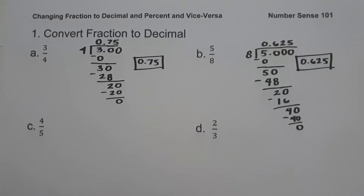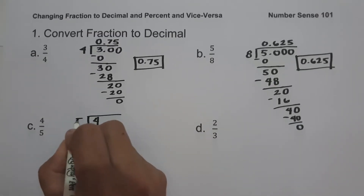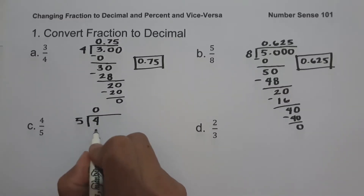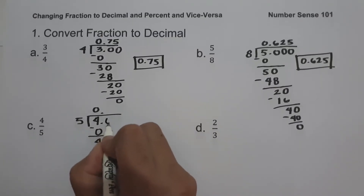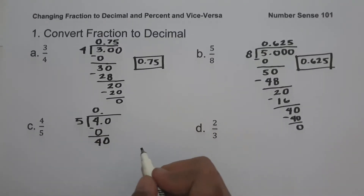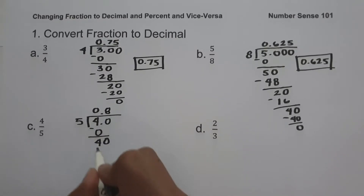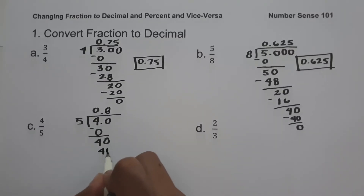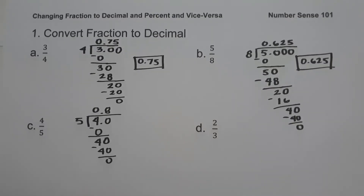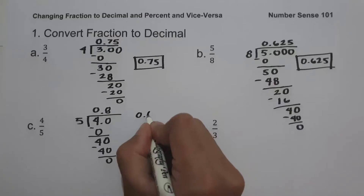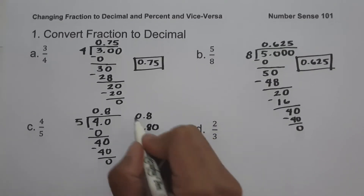On letter C, we have 4 over 5. So let us have 4 divided by 5. We add a decimal point and bring down 0. 40 divided by 5 is 8, and 8 times 5 is 40. 40 minus 40 is 0. So 4 over 5 in decimal is 0.8, or you can write your answer as 0.80. They are just the same.